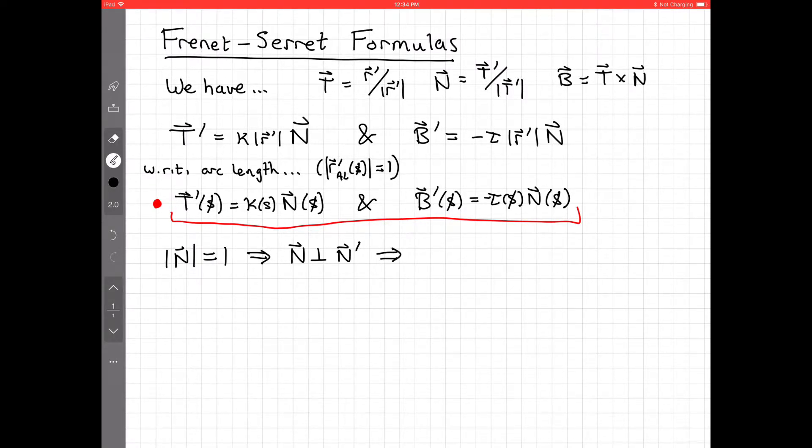What that then means is that n', if we decompose it in our TNB frame, then it must be some copy of t plus some copy of b, right? It can't involve n at all because it's perpendicular to n.